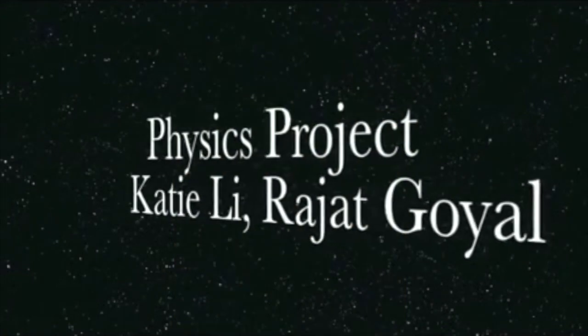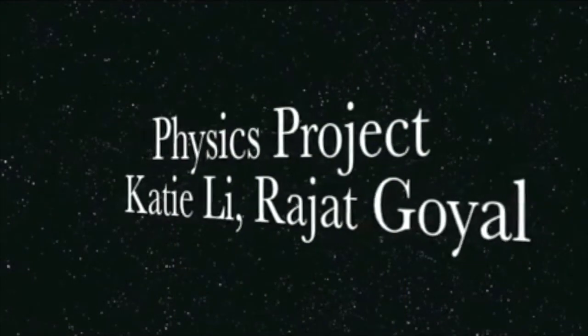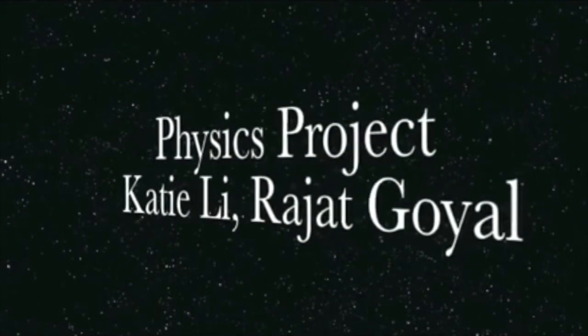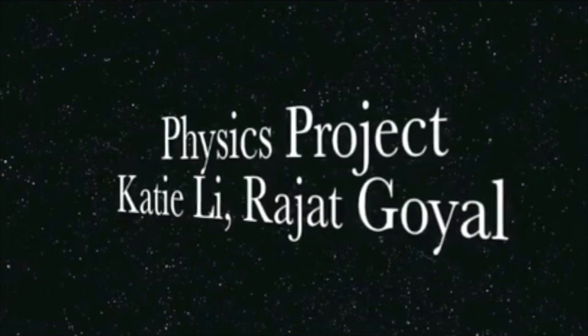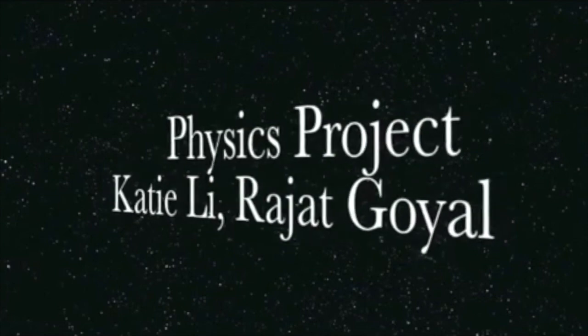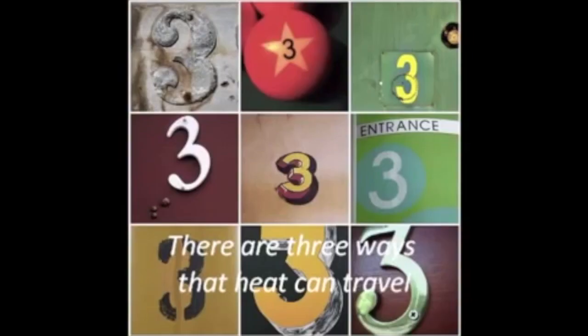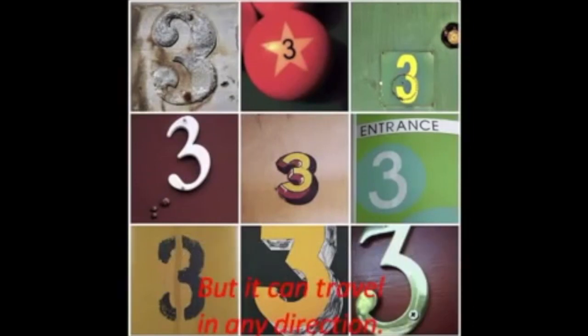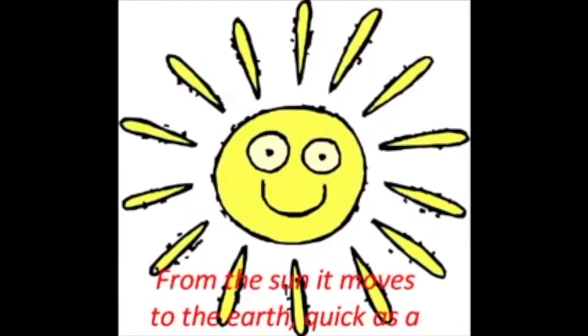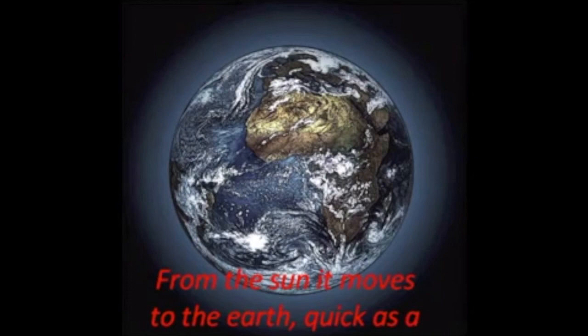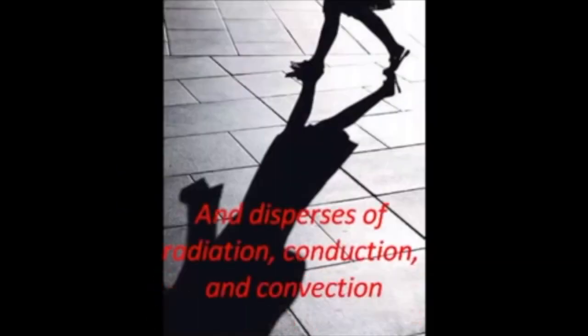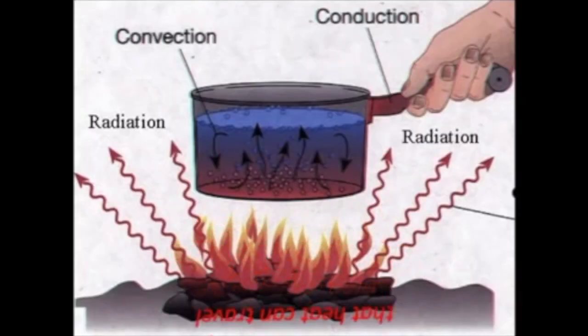Now you're going to watch a quick video just to review everything we learned. There are three ways that heat can travel, but it can travel in any direction. From the sun it moves to the earth quick as a shadow and disperses radiation, conduction, and convection.